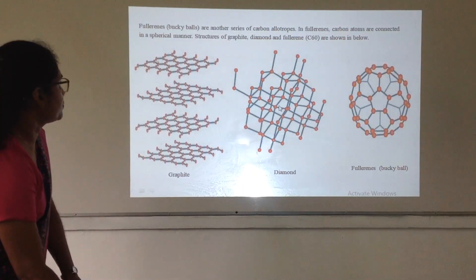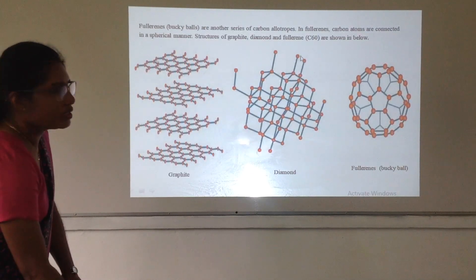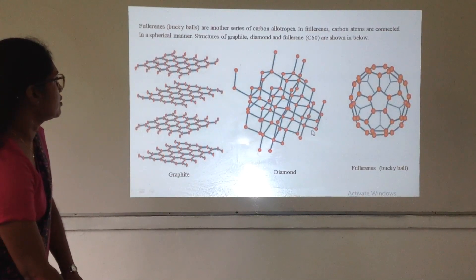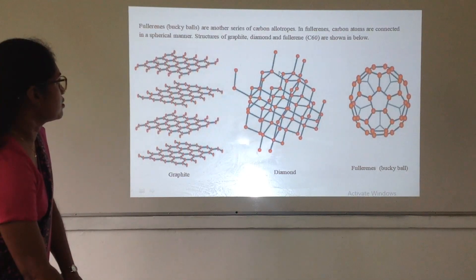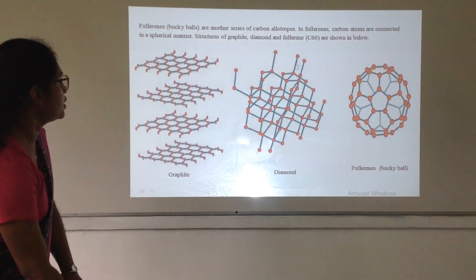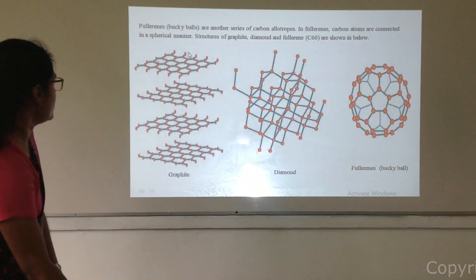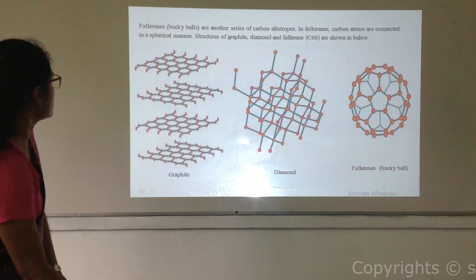For the structure of diamond: it consists of sp3 hybridization, meaning one carbon atom combines with another four carbon atoms. If we take the central carbon atom, it combines with four other carbon atoms — one, two, three, and four — forming the tetrahedral diamond structure.